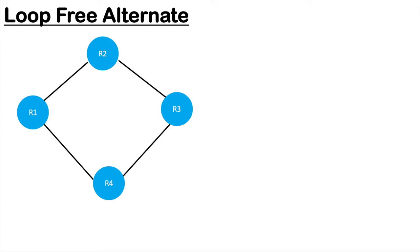Hello guys, welcome to my YouTube channel. In this video I'm going to talk about Loop-Free Alternate, which is a method to bring up the alternate path or the backup path in the routing table whenever there is a failure in the primary path. You might have heard about repair path or protection path — those are basically the backup path. LFA is a method to bring up the backup or repair path into the routing table once the primary path fails.